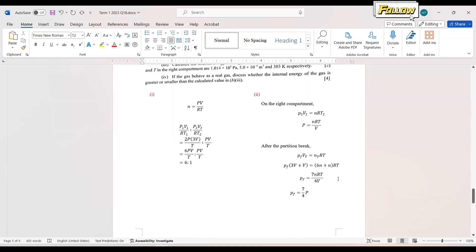By having all of these informations, we can arrange the equations: P equals 7NRT over 4V. So the final pressure is 7 over 4 of P.